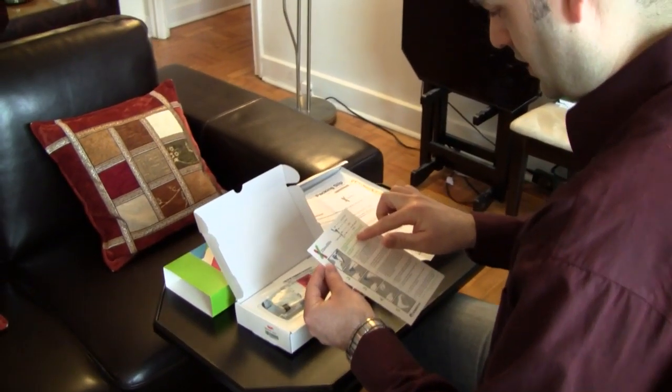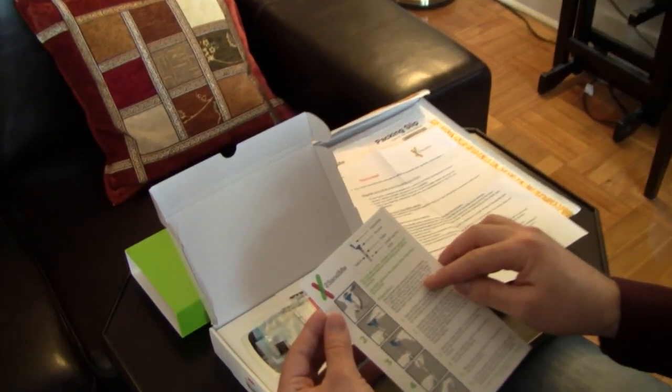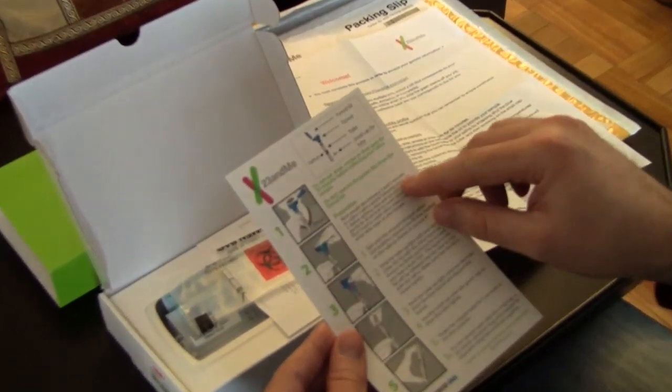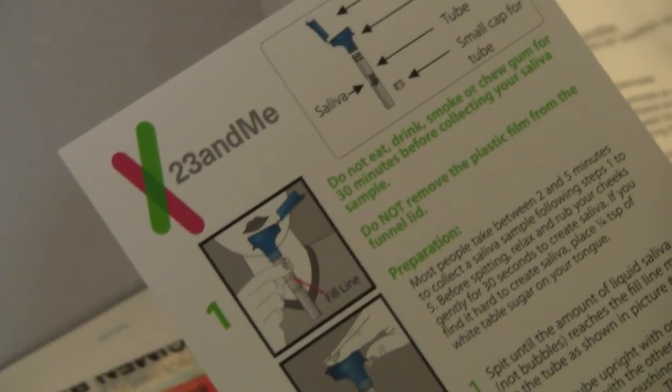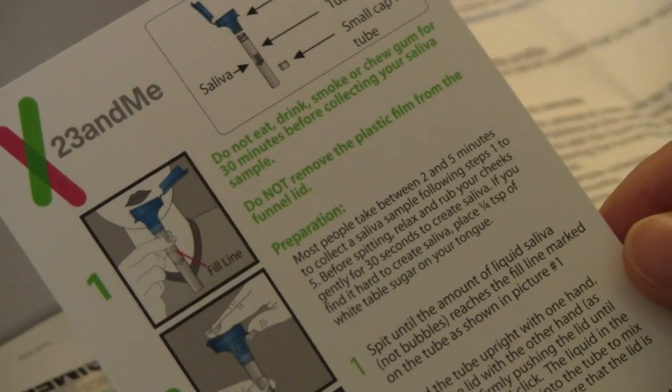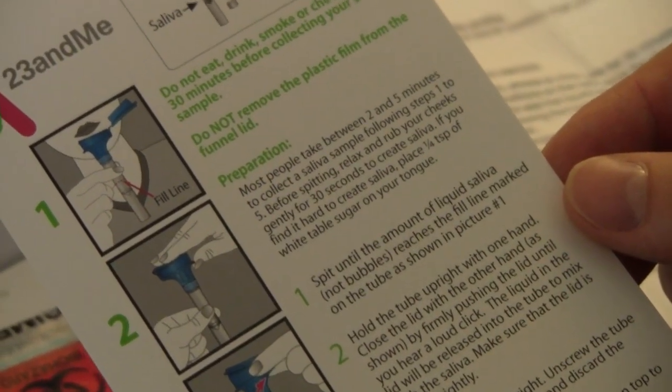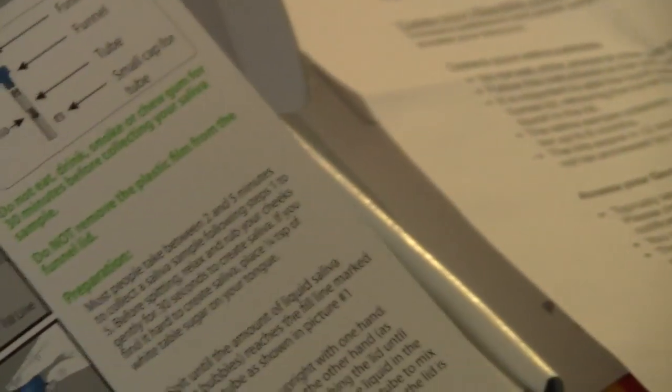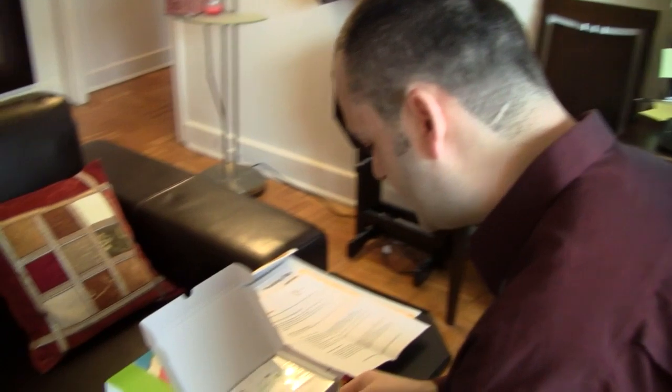Step number one: do not eat or drink, smoke, or chew gum for 30 minutes. Preparation: most people take between two and five minutes to collect the saliva sample following steps one to five. Before spitting, relax and rub your cheeks gently for 30 seconds to create saliva. If you find it hard to create saliva, place one quarter tablespoon of white table sugar on your tongue. I don't think we'll have a saliva issue today. So they said rub your cheeks for 30 seconds. You think we got 30 seconds? I think we're good. Let's give it another three or four just for luck.